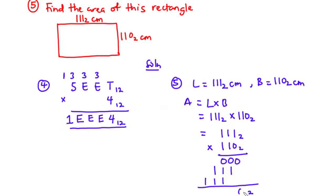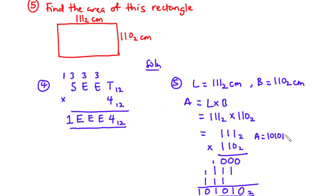0 times 1 is 0. 0 times 1 is 0. 0 times 1 is 0. 1 times 1 is 1. 1 times 1 is 1. 1 times 1 is 1. 1 times 1 is 1. And then 1 times 1 is also 1. Now, let's add all these three values in base 2. We have 0. 0 plus 1 is 1. 0 plus 1 is 1, plus 1 is 2, so we have 0. 1 plus 1 is 2, plus 1 is 3, we have 1 remainder 1. And then 1 plus 1 is 2, so we have 0 and carry on 1. Therefore, the area of this rectangle is 101010 base 2 centimeters.